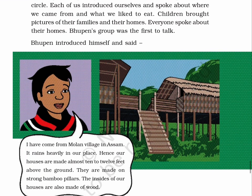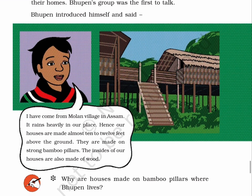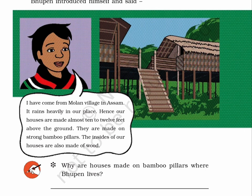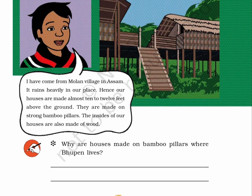Bhupen introduced himself and said — there is a picture given on page No. 119. In this picture, there is a boy on the left side and on the right side, his beautiful wooden house is given. The boy is telling something about his house, written as text in the talking bubble. He said: I have come from Molan village in Assam. It rains heavily in our place. Hence, our houses are made almost 10 to 12 feet above the ground. They are made on strong bamboo pillars. The insides of our houses are also made of wood.